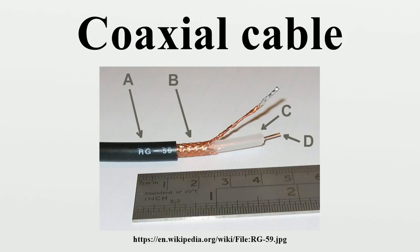Sometimes the braid is silver-plated. For better shield performance, some cables have a double layer shield. The shield might be just two braids, but it is more common now to have a thin foil shield covered by a wire braid. Some cables may invest in more than two shield layers, such as quad shield, which uses four alternating layers of foil and braid.